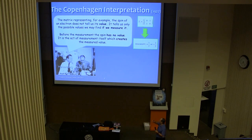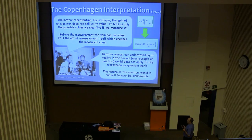Heisenberg's going on. Before the measurement, the spin has no value. This physical quantity has no value. It is the act of measurement itself which creates the measured value. This was Heisenberg and Bohr's idea. Bohr went even further. In other words, our understanding of reality in the normal, and for physicists we often say macroscopic or classical world, the world we seem to be living in, the unhidden world, our normal understanding of that does not apply to the microscopic or quantum world, the world of atoms and molecules and electrons and things like that.